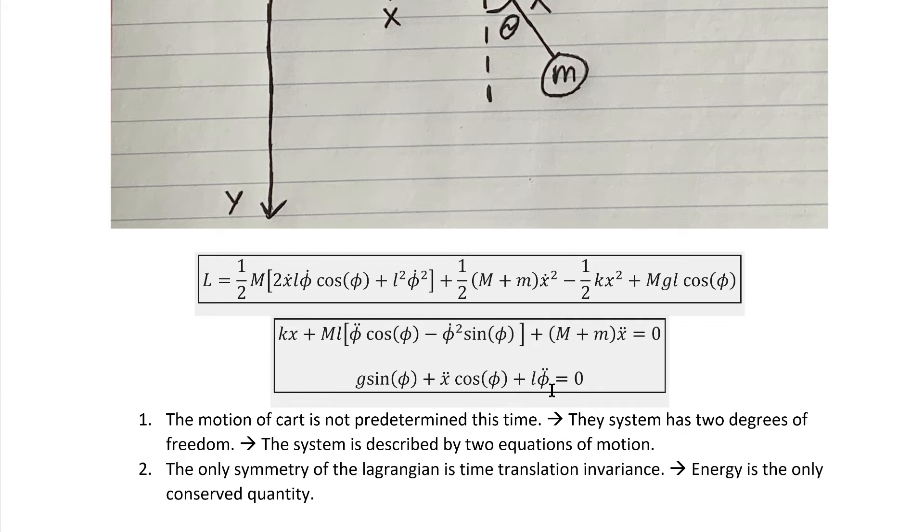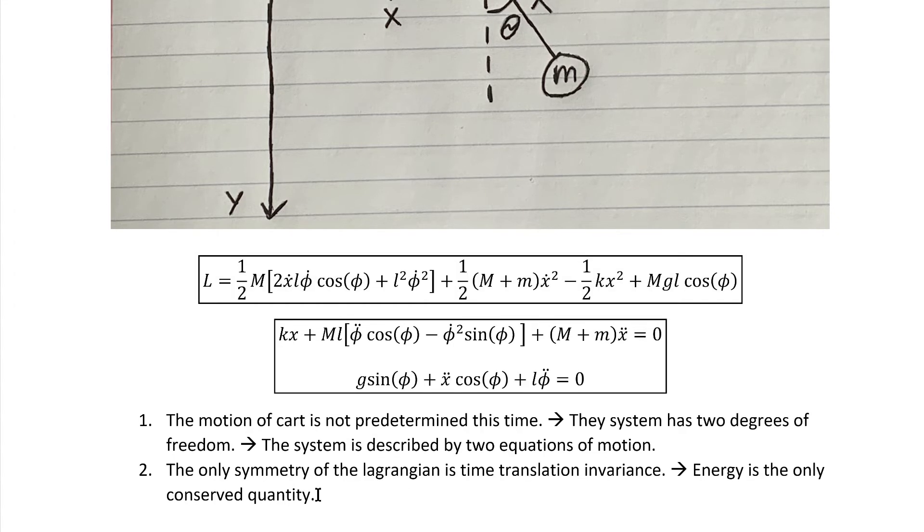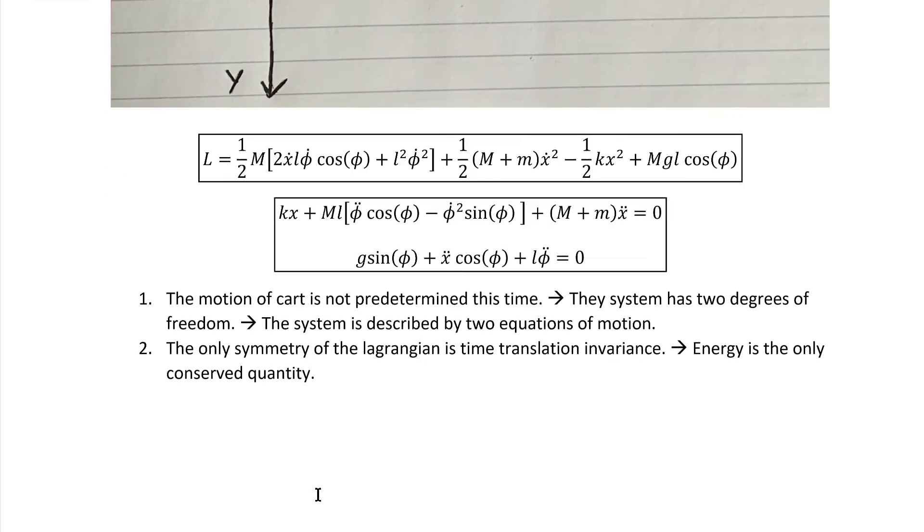The only symmetry in this Lagrangian is time translation invariance. We can see it depends on both x and theta, so we don't have any opportunities there. Of course, that does mean we have more than we did with the first Lagrangian as far as symmetries. And of course, energy conservation is implied here. So we've got a new symmetry, a new conserved quantity, and one more degree of freedom leading to one additional equation of motion.